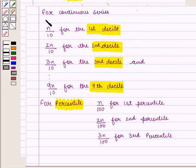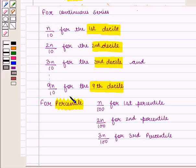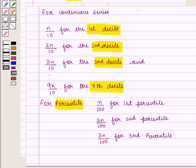We should observe that for continuous series we use N/10 for the first decile, 2N/10 for the second decile, 3N/10 for the third decile. And for percentiles we use N/100 for the first percentile, 2N/100 for the second percentile, 3N/100 for the third percentile. In the case of individual and discrete series, N is replaced by N plus 1.